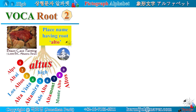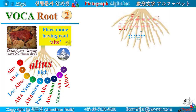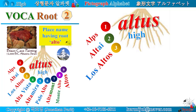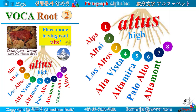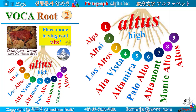There are many places in the world with the Latin root 'altus,' which means high: Alps, Altai, Los Altos, Alta Vista, Altamira, Palo Alto, Altamont, Monte Alto, Altos. From now on, let's study a group of words and place names having the Latin root 'altus.'